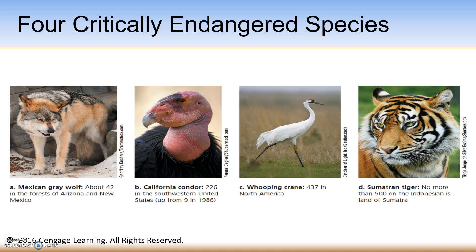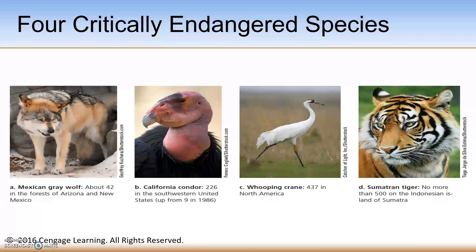On the screen are four critically endangered species threatened with extinction largely because of human activities. The number below each photo indicates the estimated number of individuals remaining in the wild. On the left is the Mexican gray wolf — about 42 remaining in the forests of Arizona and New Mexico. Here is the California condor; there used to be only nine in 1986, but now there are an estimated 226 condors in the southwestern United States. This species is recovering but is still considered critically endangered.